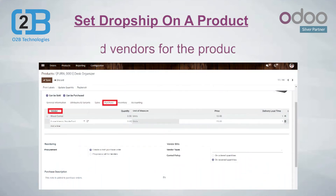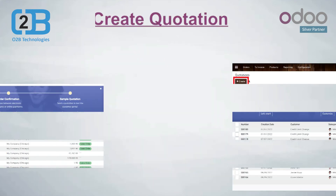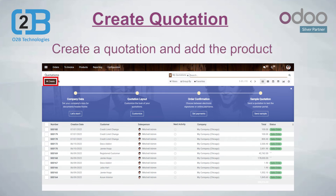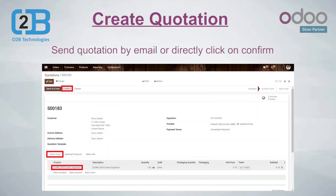Add vendors for the product. You can add multiple vendors, but only the first vendor will be applicable for the drop ship option. To check the drop ship feature, create a quotation and add the product which has the drop ship feature enabled.